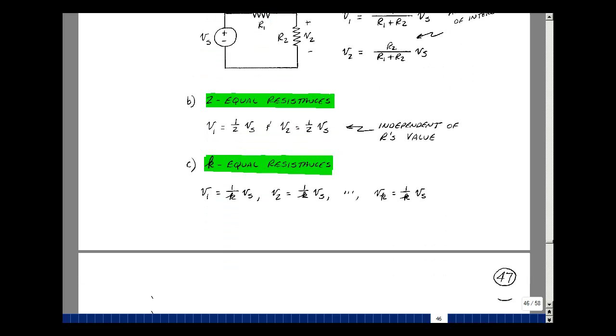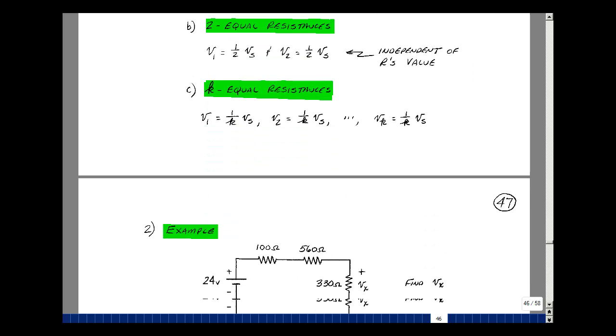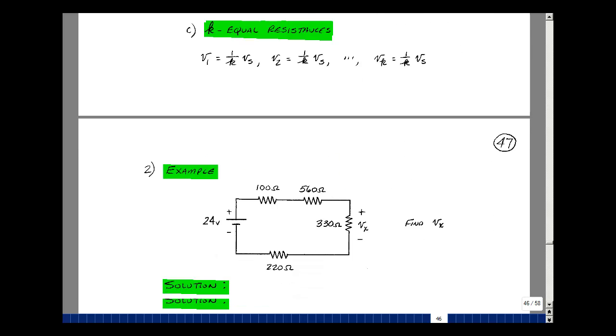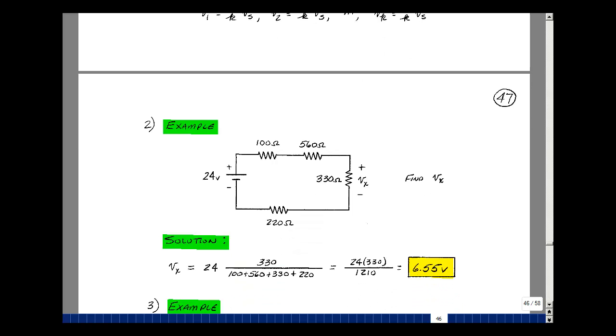Let's do some examples. Suppose that I've got a 24-volt battery, and I've got four resistances in series, 100 ohms, 560, 330, and 220. So the voltage across the 330 ohm resistance is 330 over 100 plus 560 plus 330 plus 220 times the 24 volts. And that turns out to be 6.55 volts.